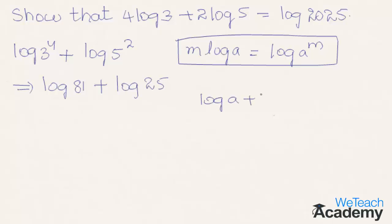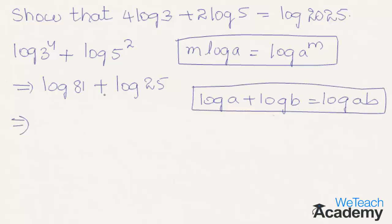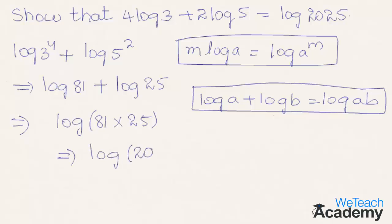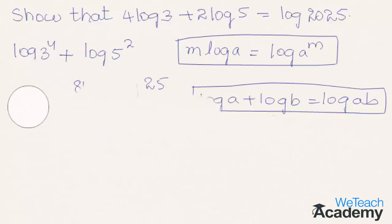Using the law of logarithm of product, we can write log a plus log B is equal to log AB. So using this law we can write log 81 into 25, which is equal to log 2025. Therefore we proved that 4 log 3 plus 2 log 5 is equal to log 2025. Hence proved.